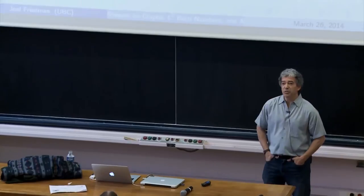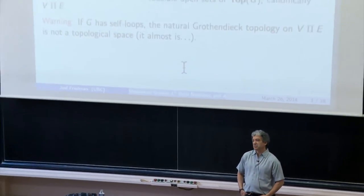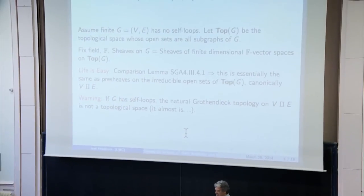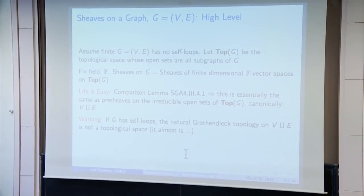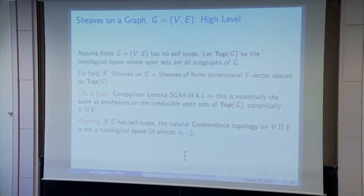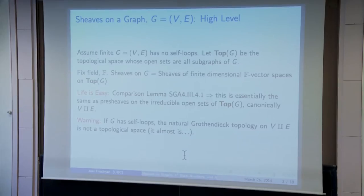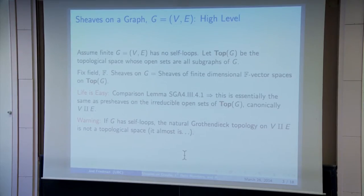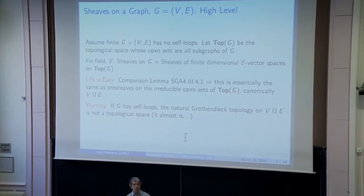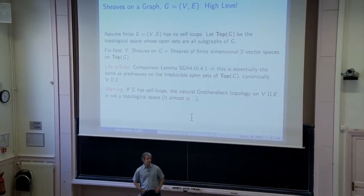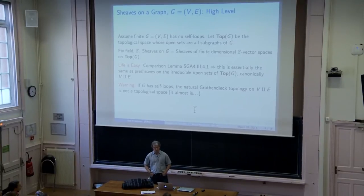I want to give a very quick high-level view of what a sheaf on a graph is. If you know sheaf theory, then essentially you know what a sheaf on a graph is. If you have a graph, you can look at the lattice of subgraphs, which gives you a finite topological space if the graph is finite. If the graph has no self-loops, the open sets are exactly the subgraphs of the graph.